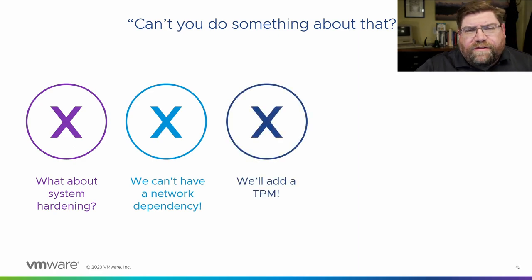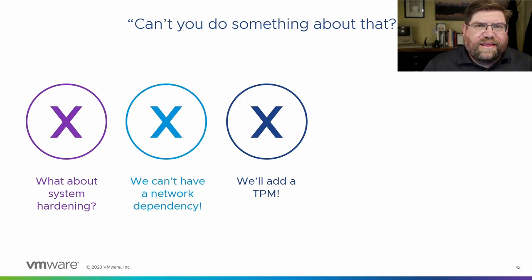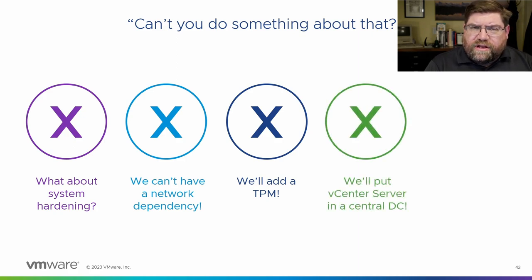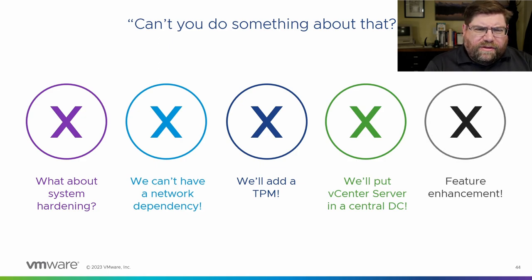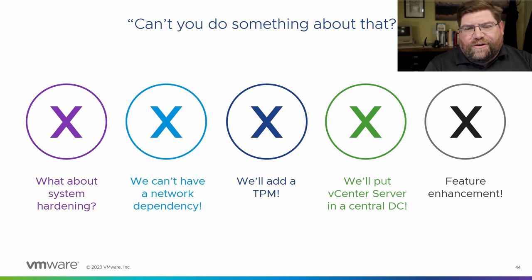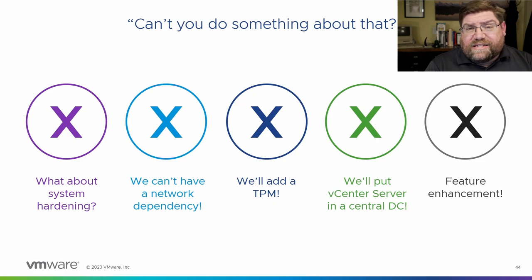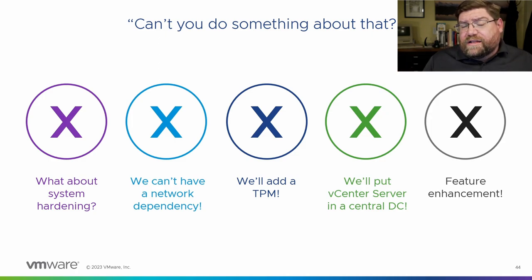Adding a TPM is great — I definitely urge adding TPMs to everything. But again, the secrets are stored on the host, so if somebody steals the host they're going to get the secrets there too. What about putting a vCenter server in a central data center? Remember that vCenter server is just one component — the key is pushed out to all the hosts as well, so that's not going to be super helpful. What about a feature enhancement — can we build it so it handles this? We'd just be turning native key provider into a standard key provider, and we have that and it works well. We're always open to feedback, and we've heard a lot of these things — it's a good opportunity to talk about system hardening especially.